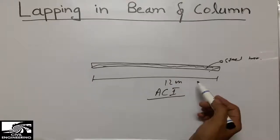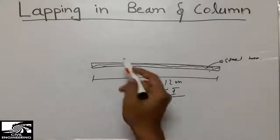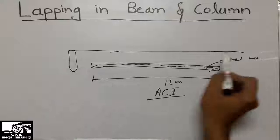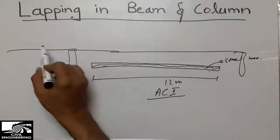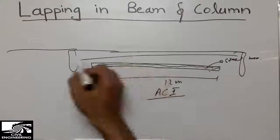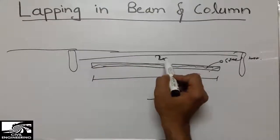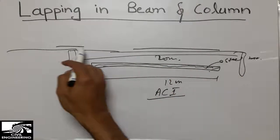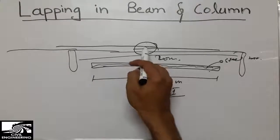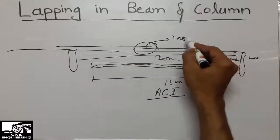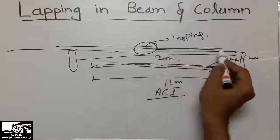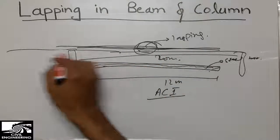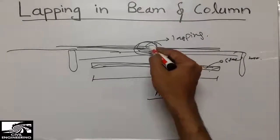In practical field, when we are on site and construct a beam — for example a beam going between two columns — if the distance between the two columns is more than 12 meters, say 20 meters, the bar is only 12 meters. So we place another bar alongside it and overlap them. This is what we call lapping.